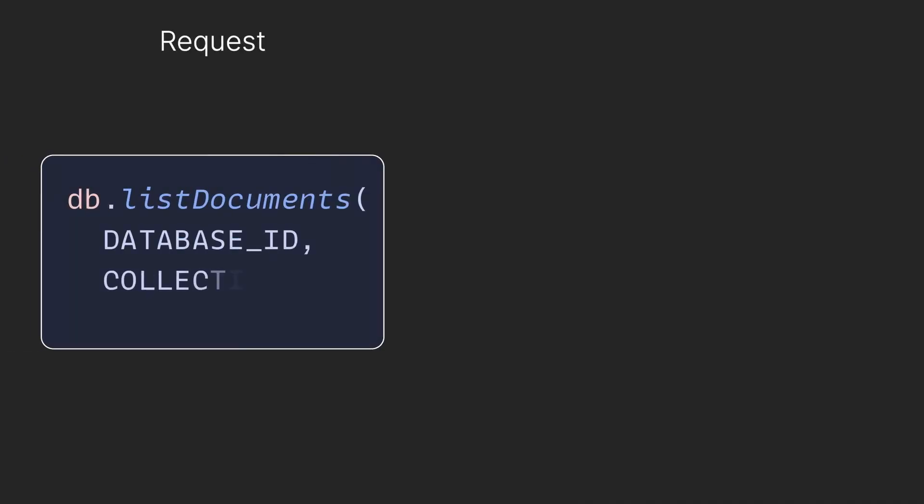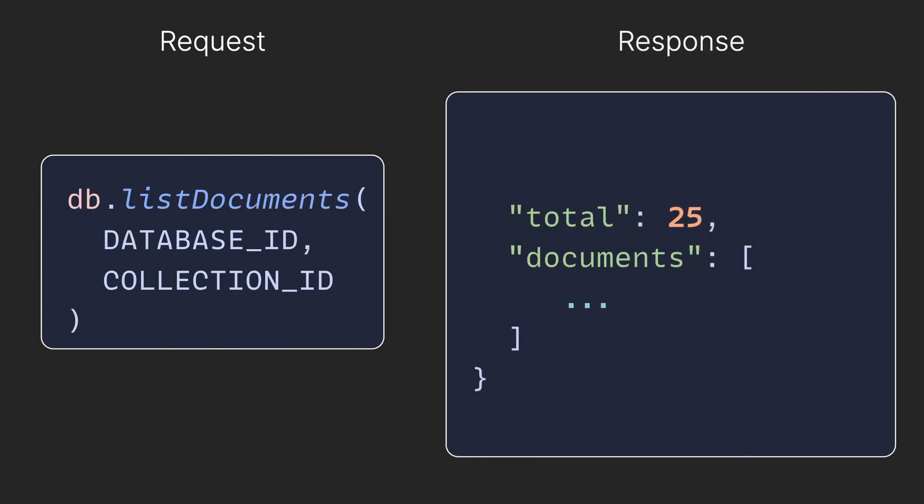When you make a read request to an Appwrite database collection, you get back a standard response. In many cases that's not enough — we might need to modify that request to get back exactly what we want in the format we want it. This is something we can accomplish with Appwrite queries.